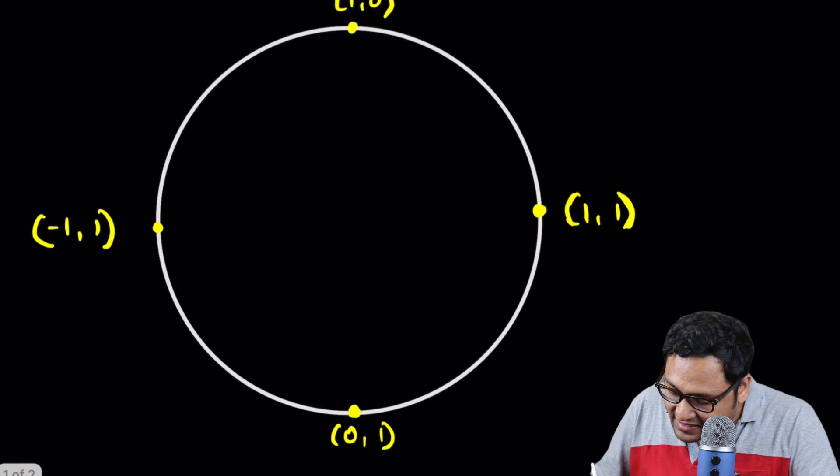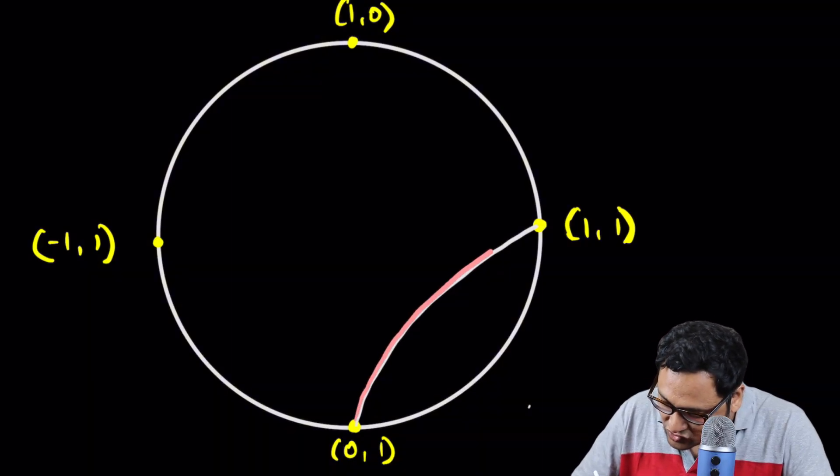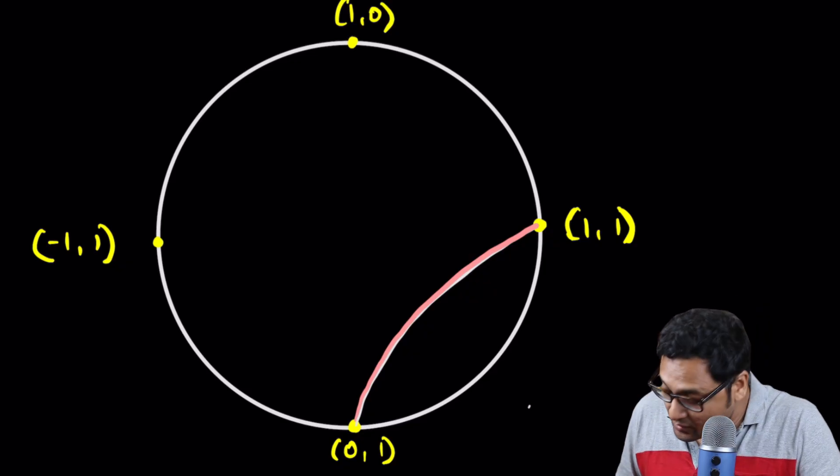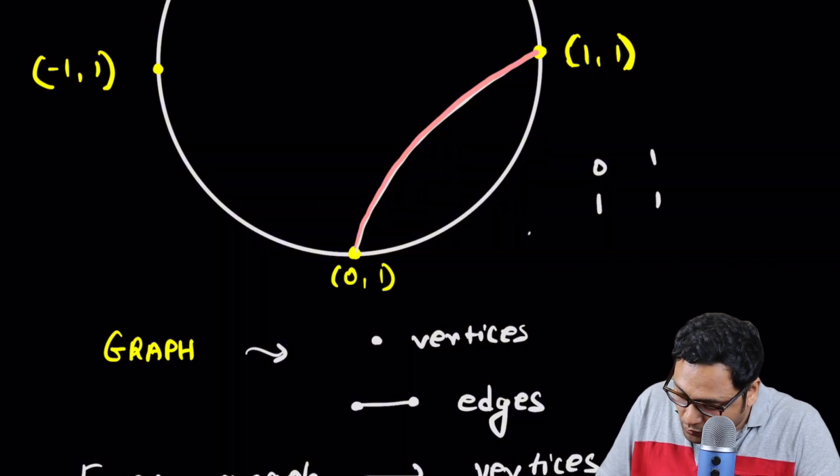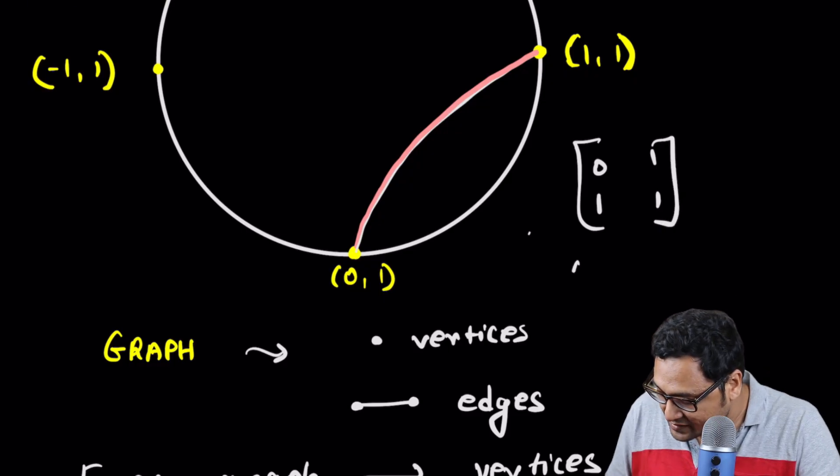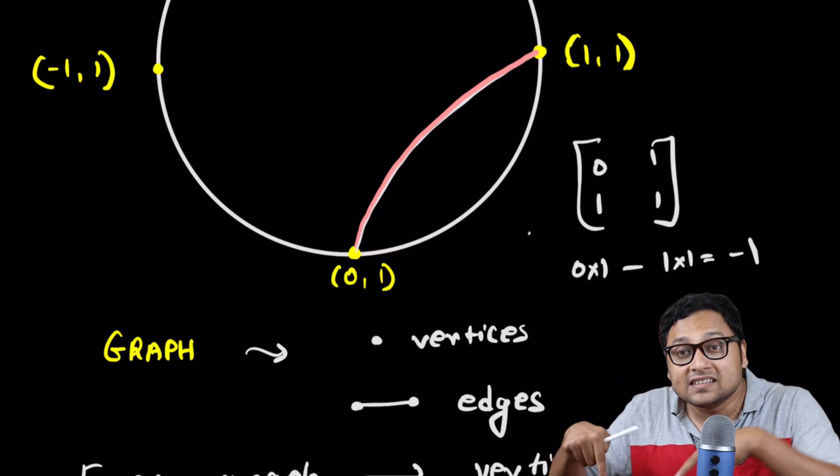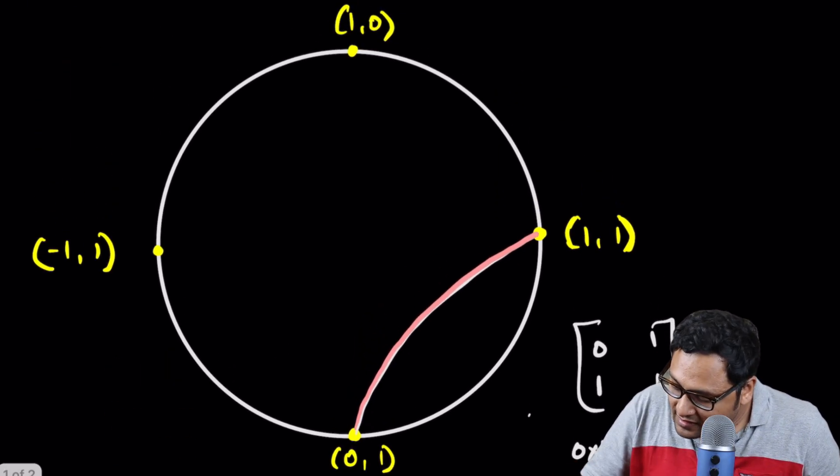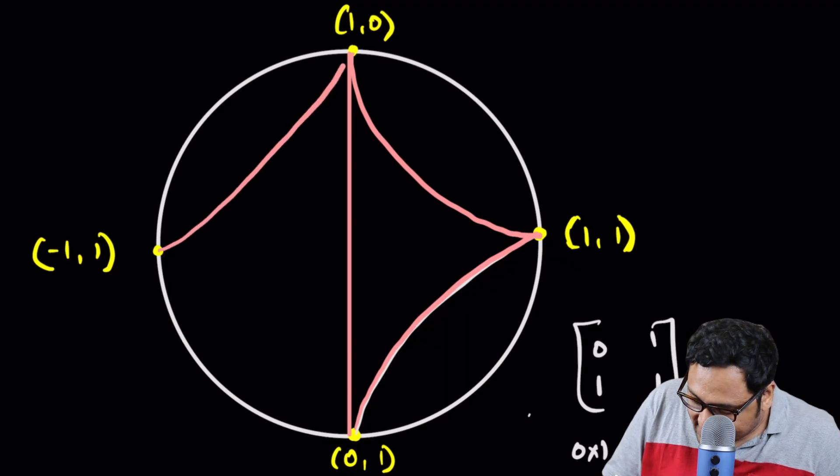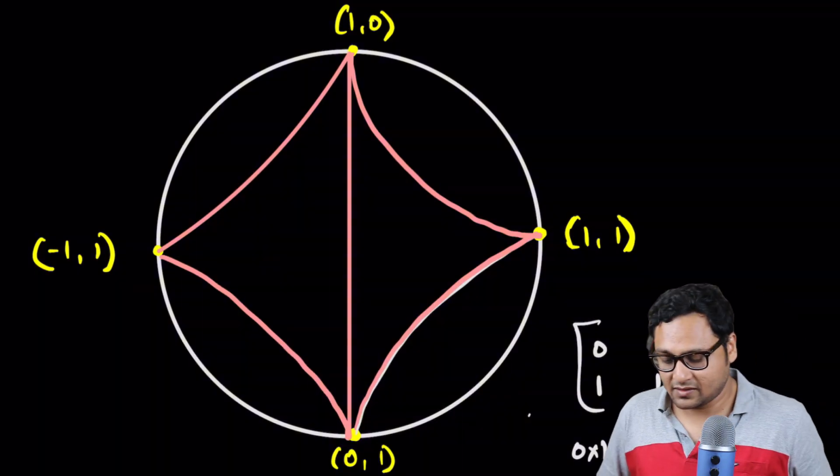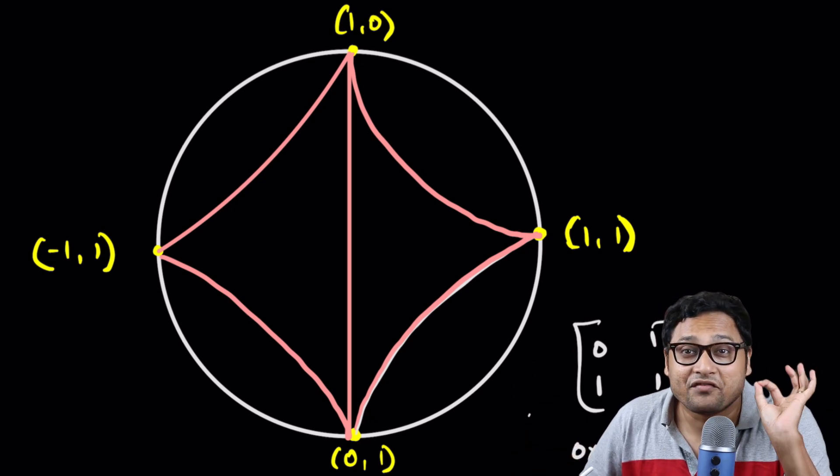You see that immediately we have this edge. Maybe I can draw it using a different color. Here is an edge. Why do I join 0, 1 and 1, 1? I join it because 0 by 1, or if I write it in the matrix format, 0, 1, 1, 1. If I do the determinant of this matrix, it will be 0 times 1 minus 1 times 1, which is minus 1. That is the condition. I will join two vertices using an edge if they have this determinant property. The same thing goes with these two vertices. The same thing goes with these two vertices. You can check these two vertices and these two vertices. You can check each of those cases. But there are many, many other points.